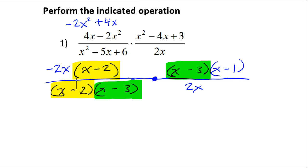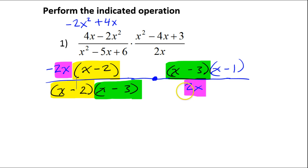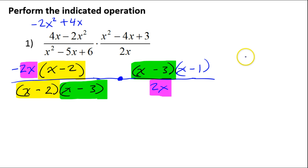There's one more thing to cancel. See the negative 2x and the positive 2x? You might think we can't cancel these because one is negative, but the reality is the negative sign can be left. So I can cancel out the 2x and the 2x, but the negative sign won't cancel out — I'll keep it. Think of this negative sign as a negative 1. So we're canceling out the 2x's and leaving negative 1. After everything cancels out, what I have is negative times x minus 1.